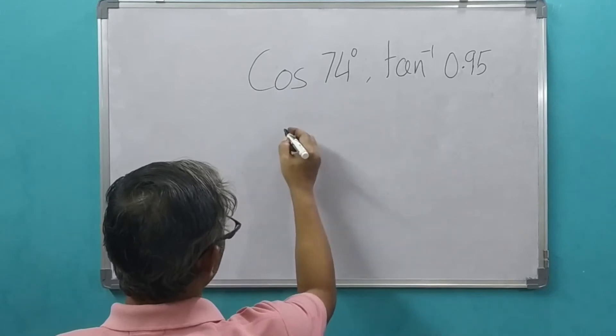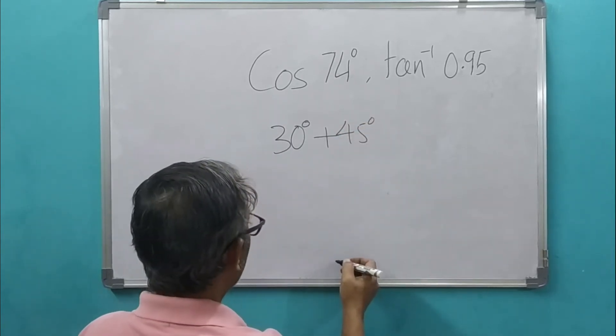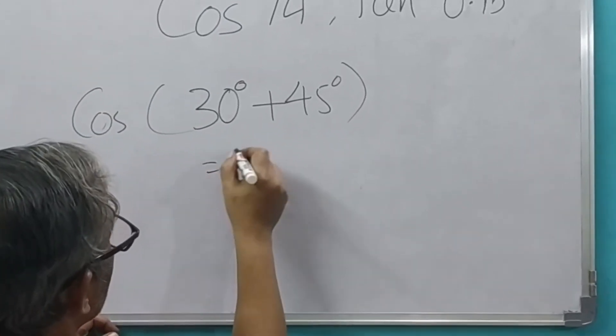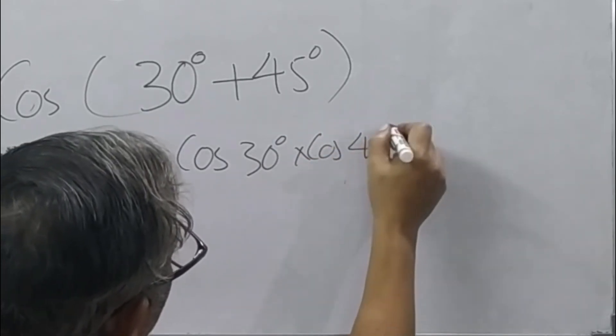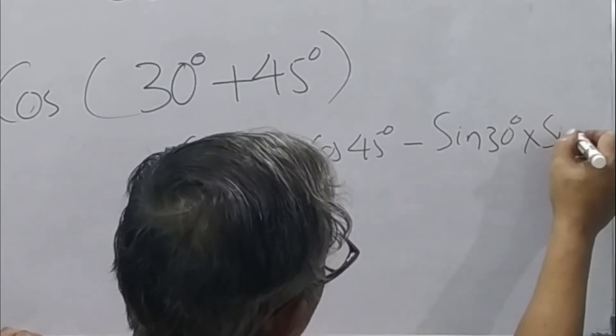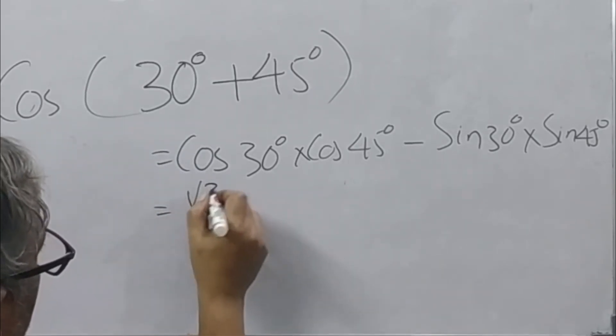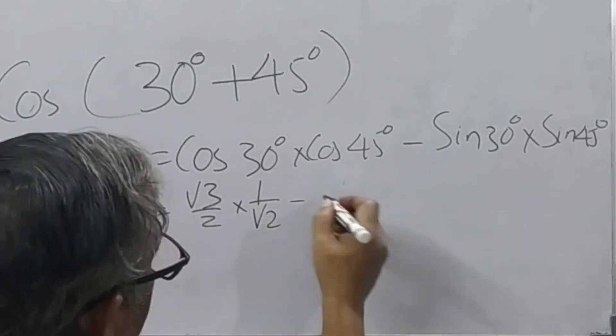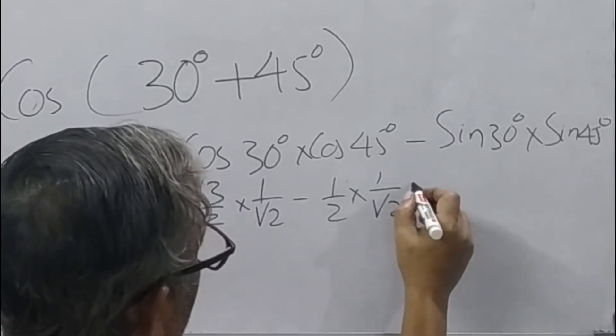The 75 degrees is made by 30 degrees plus 45 degrees and the cos function for two angles is given by cos of 30 degrees into cos of 45 degrees minus sin of 30 degrees into sin of 45 degrees. That would give us cos of 30 is root 3 by 2 into cos of 45 is 1 by root 2 minus sin of 30 is half into sin of 45 is 1 by root 2.